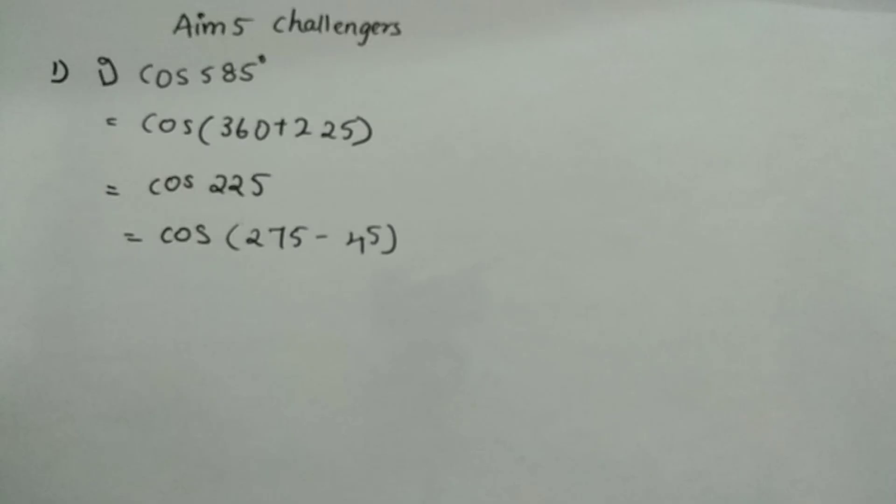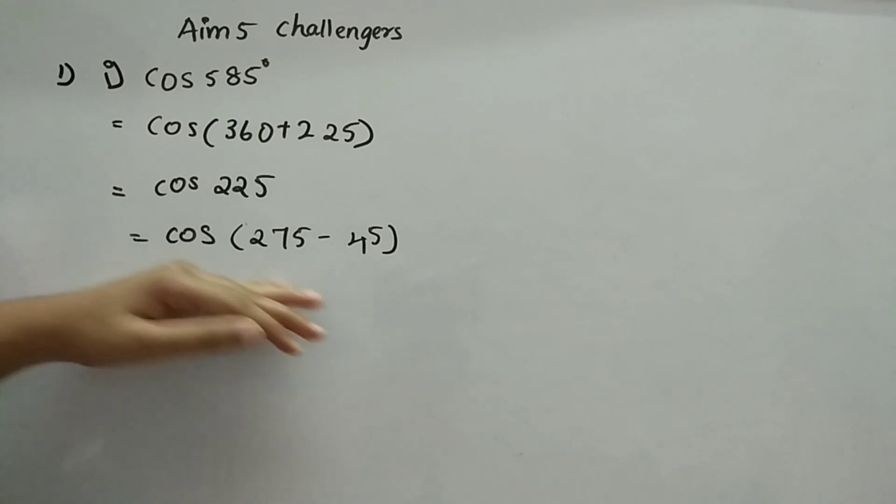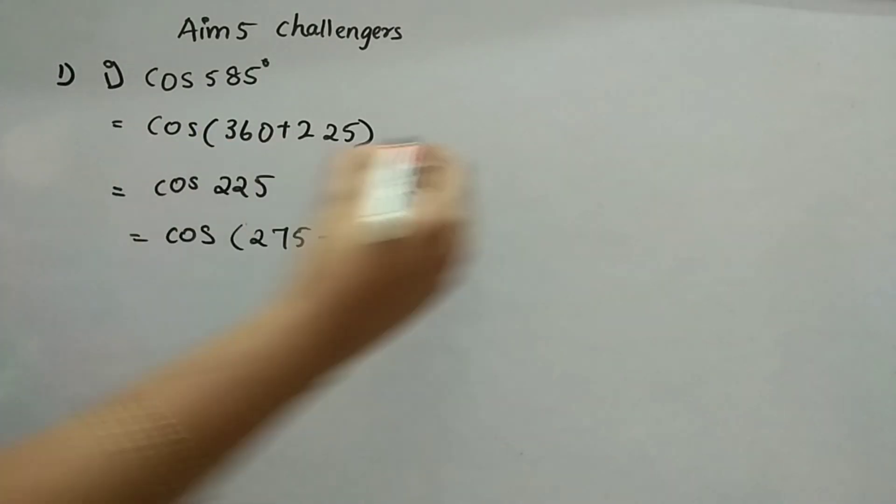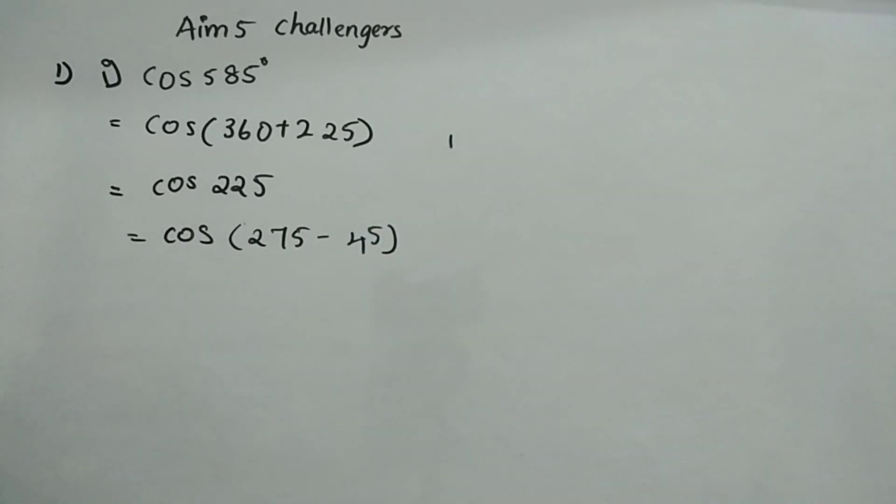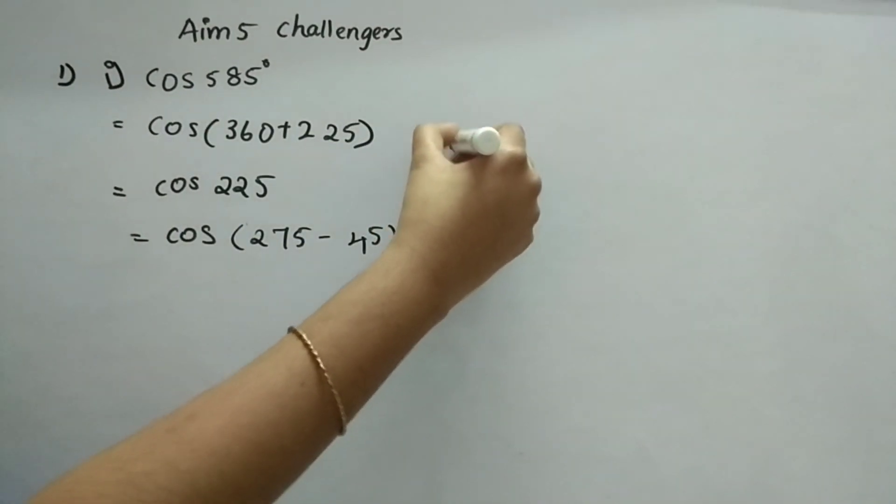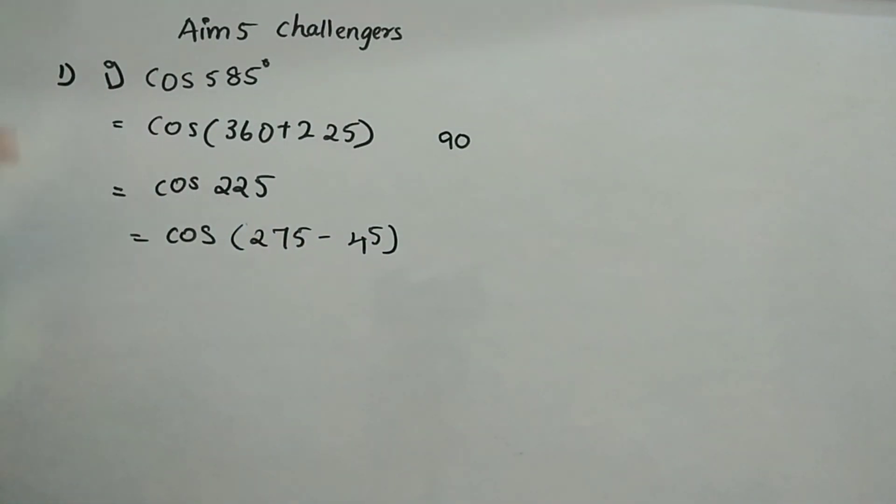So 275 minus 45. Now, there is one more rule when it is cos 275. This is actually a rule: if it is odd multiple of 90, or if it is even, even means same thing.